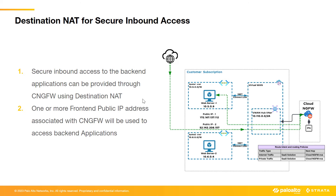Let's now discuss how destination NAT capability will be utilized to provide secure inbound access through Cloud NGFW. If we wanted to access a web server hosted within a spoke VNet directly from the internet, applications are generally accessed through the front-end IP of a load balancer. On successful creation of Cloud NGFW, you will be exposed with one or multiple public IP addresses, and we are going to leverage these public IP addresses to provide secure inbound access to web servers — that is where the destination NAT functionality comes into picture.